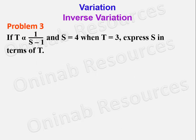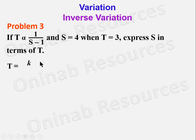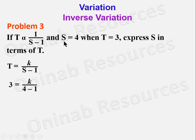We go to Problem 3. If t varies inversely as (s − 1) and s = 4 when t = 3, express s in terms of t. To translate this: if t varies inversely as (s − 1), it means t = k/(s − 1). With s = 4 and t = 3, we get 3 = k/(4 − 1).